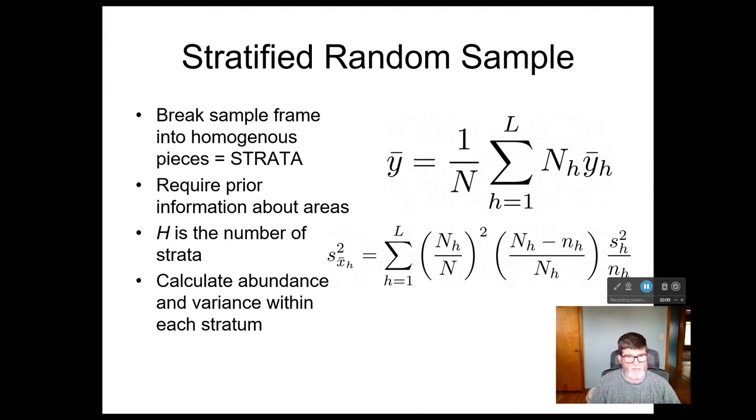I'm using L now for the number of stratum. And essentially what you do is you take your sample from your stratification, and then you're going to calculate weighted averages of the mean and the variance. So for the mean, we use this formula. We calculate the sample mean within each stratum, and then essentially we sum them up and multiply by the number of sample units in each stratum divided by the total number of sample units. That gives us a weighted mean for the whole area.